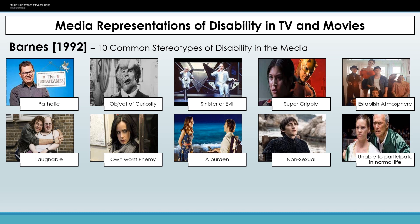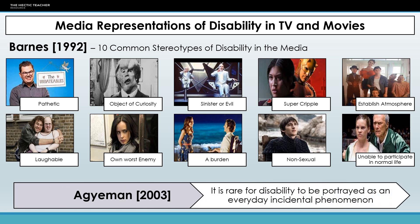Finally, there's the stereotype of being unable to participate in normal life, and this is portrayed as a really bad thing for them. The example here is Million Dollar Baby — the majority of the film looks at Hilary Swank's character becoming a female boxer, but the film is set up as her telling her story from a hospital bed after an accident where she is paralysed from the neck down and wants to end her life. So we have this idea that they're not able to participate in normal life and don't want to be part of everyday life.